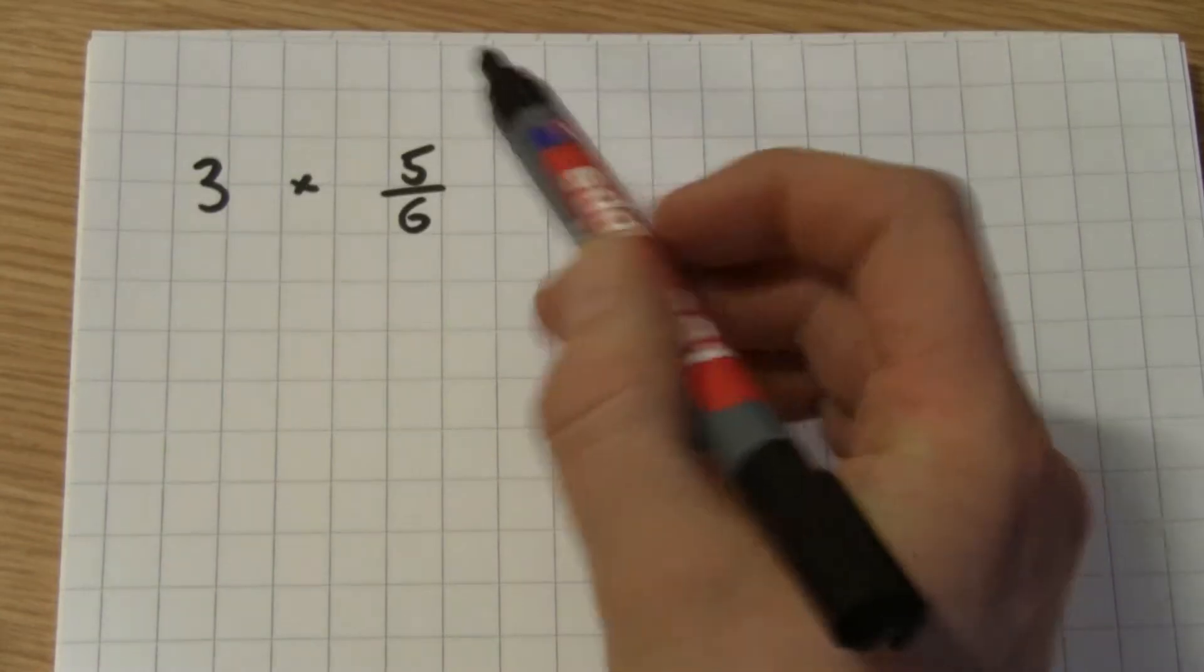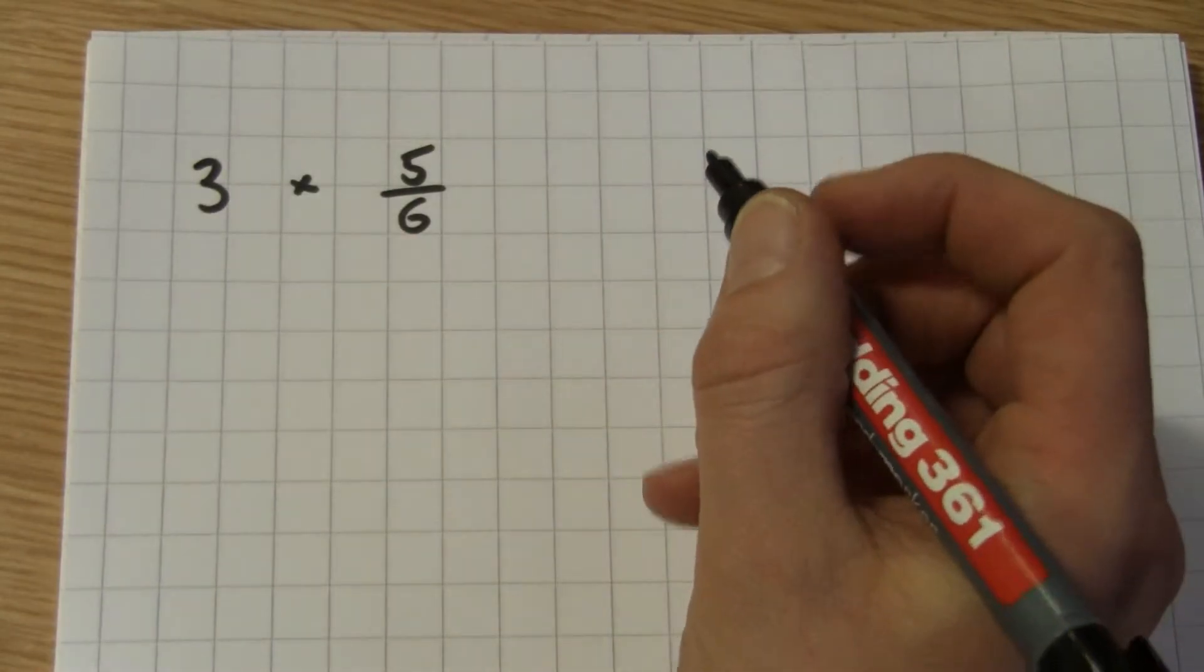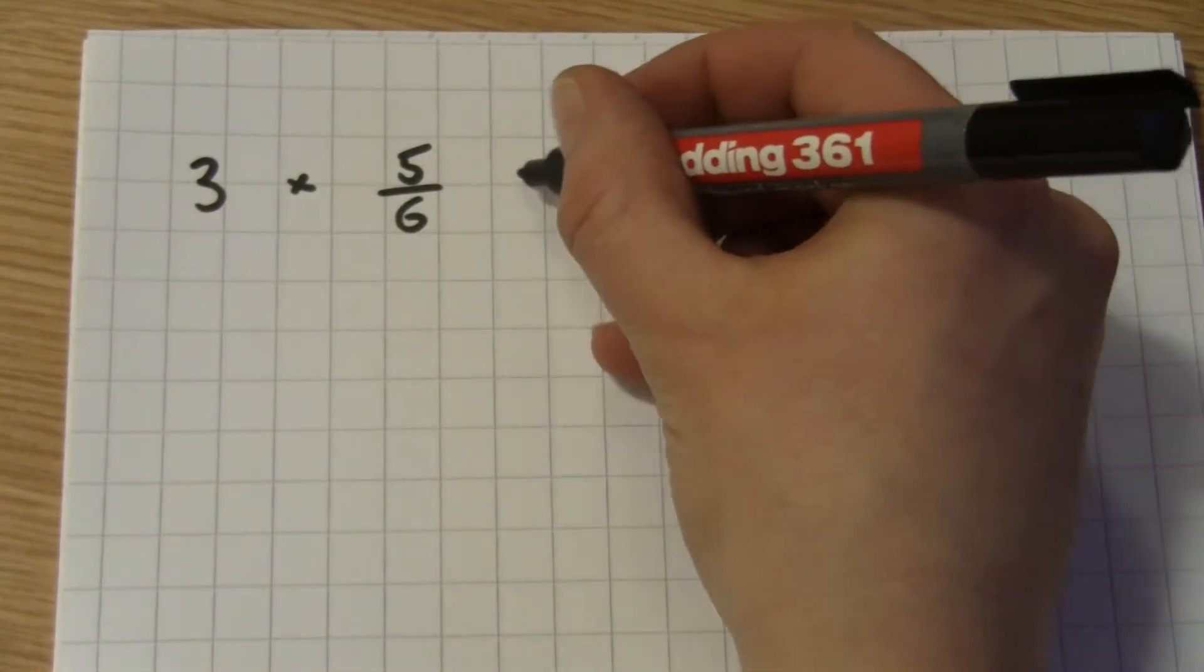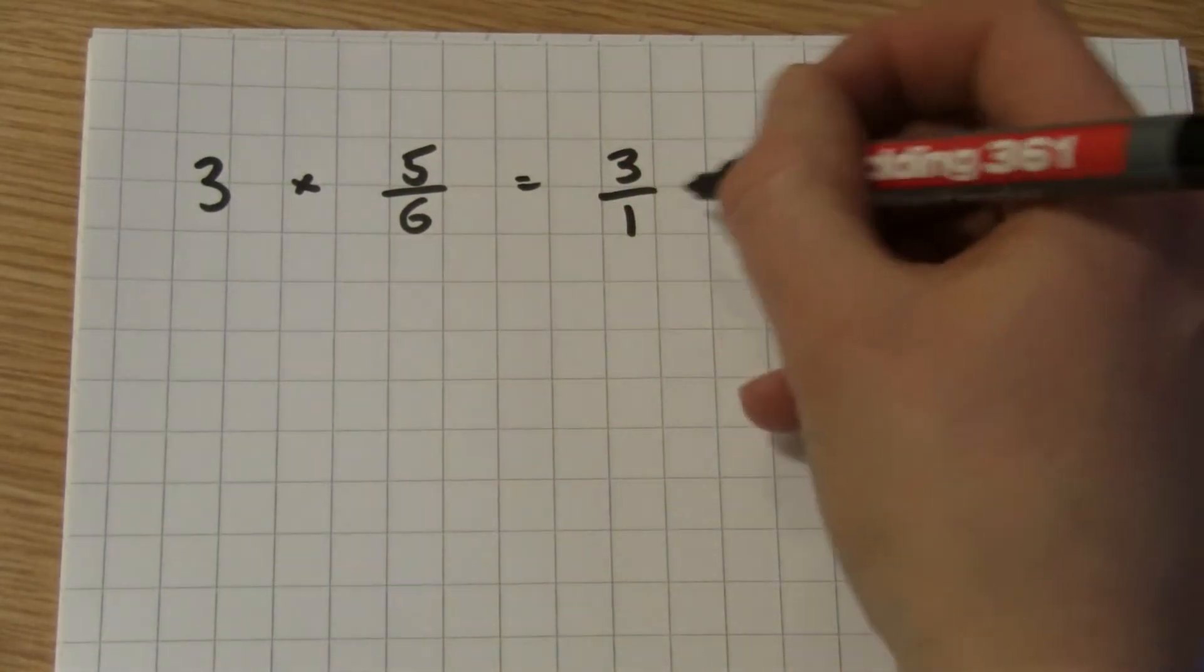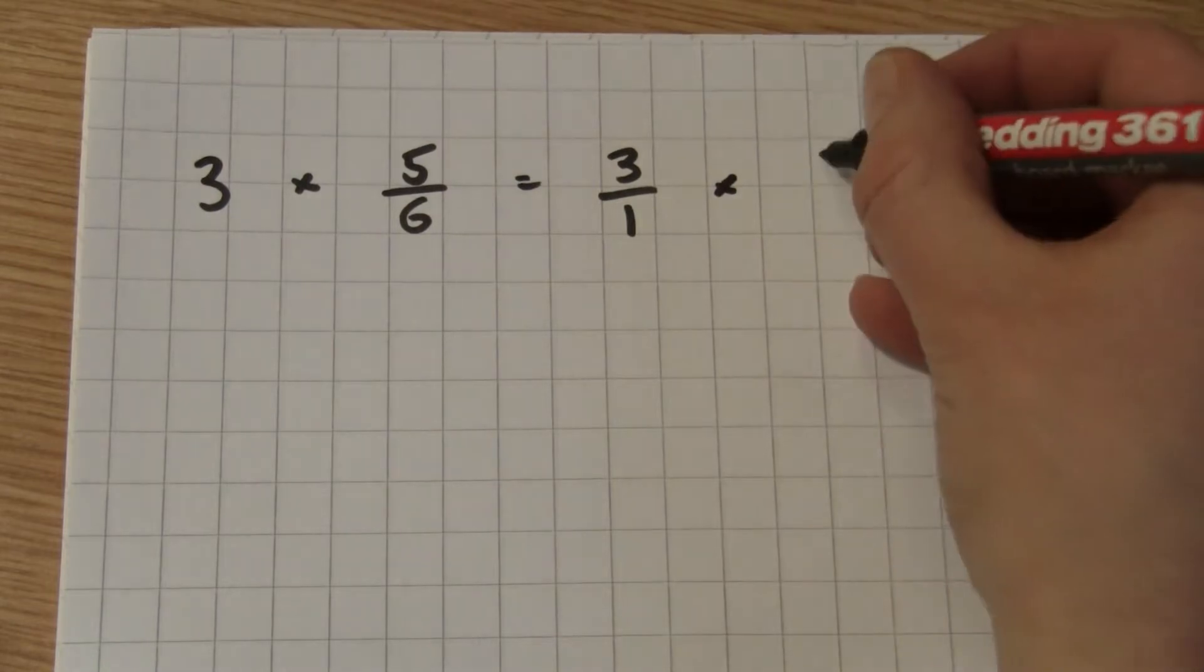OK, let's change this to a format we understand. So if we turn 3 into a fraction, we get 3 over 1, because 3 divided by 1 is simply 3. We're going to multiply that by 5/6.